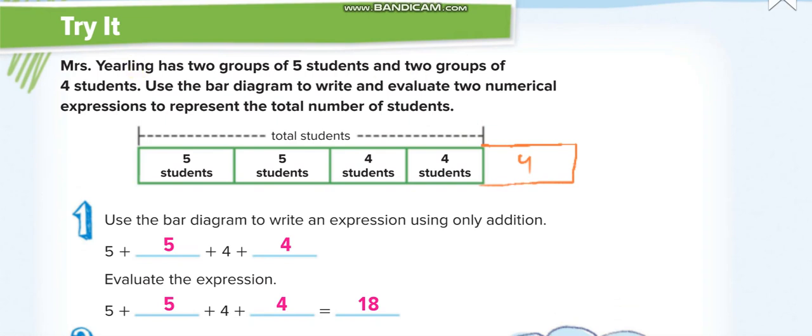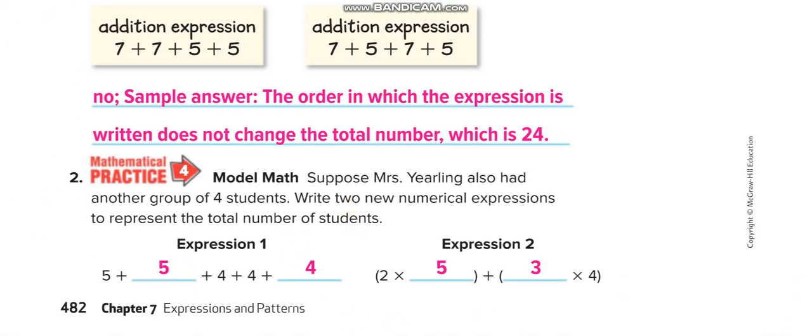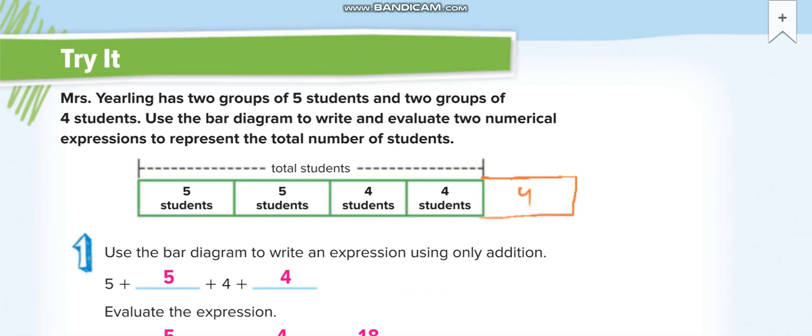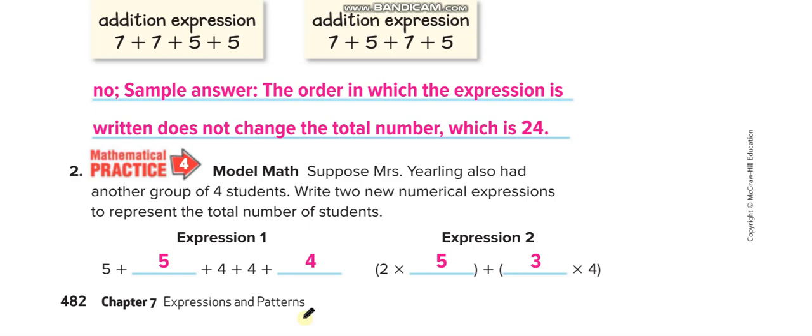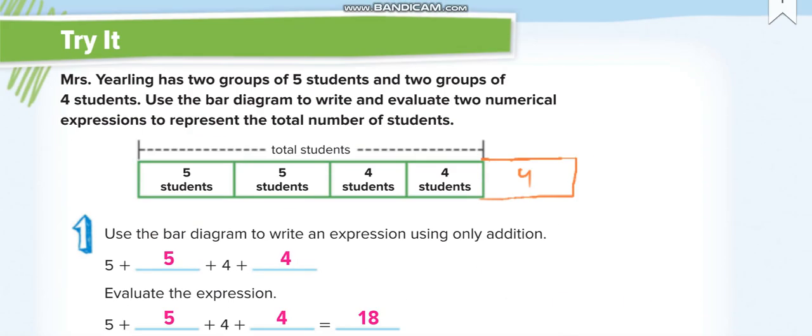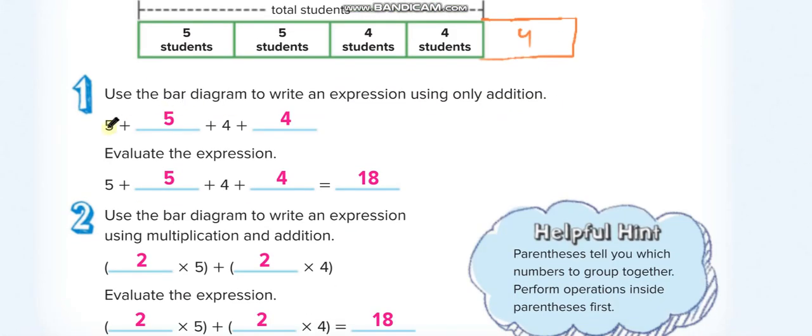Here Mrs. Yearling has two groups—this extra 4 I drew for the last question here. I will show you at the end. I will erase it now. Forget this now, don't consider this one now. We will use this for the last question here. Okay, now Mrs. Yearling has two groups of five students and two groups of four students. Two groups of five—one, two—and two groups of four—one and two.